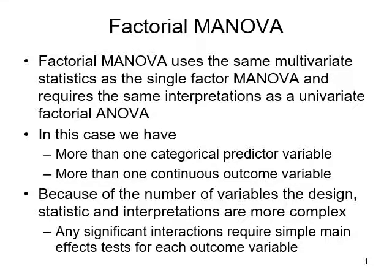For example, in a very simple factorial MANOVA — a two by two factorial MANOVA with two DVs — we have two categorical predictors each with two levels and two continuous outcome variables. We're going to have a single interaction, but if that interaction is significant we also have to see if it's significant with the first DV and with the second DV. For each DV that it's significant in, we then have to do the simple main effect test to find out exactly where those differences are.